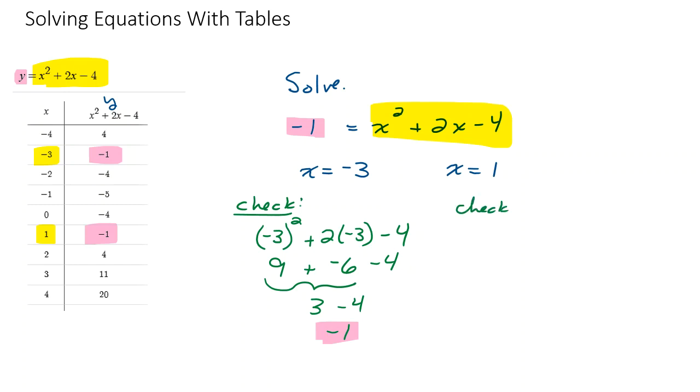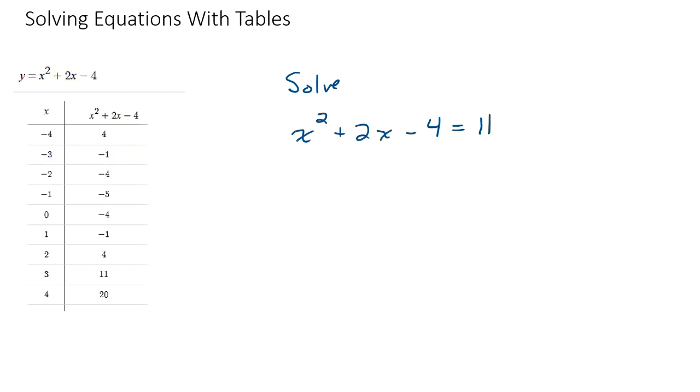Why don't you do the check for one? That'll be good practice. Make sure that comes out to be negative one as well. Let's try one more from this table. Maybe two more. Okay. x squared plus two x minus four equals 11.